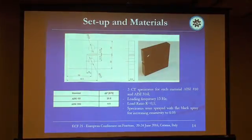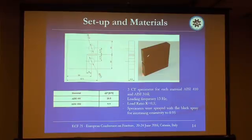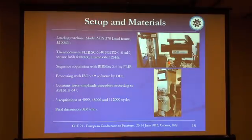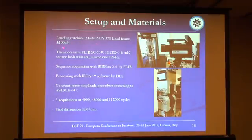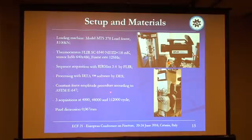In this work, we used three CT specimens of two materials: martensitic and austenitic stainless steel. The loading frequency was 13 Hz, and the load ratio was 0.1. The specimens were sprayed with a flat black spray to increase surface emissivity. The loading machine was an MTS with a 100 kN load cell. The thermal camera was a FLIR SC6540, and the data were processed by IRTA software. A constant force amplitude procedure was used according to the standard. We made three acquisitions at 48,000 and 112,000 cycles, and the pixel dimension was 0.067 millimetres.